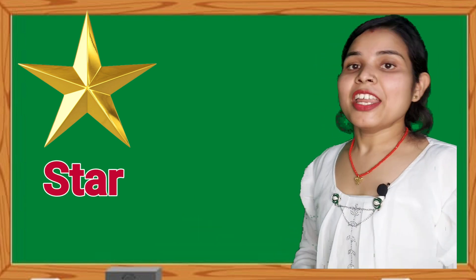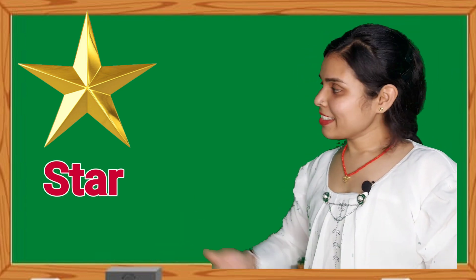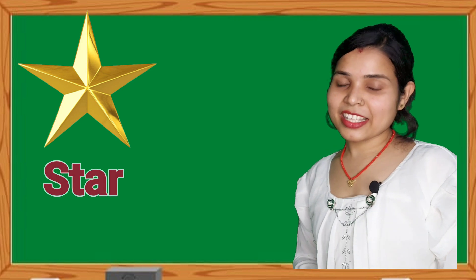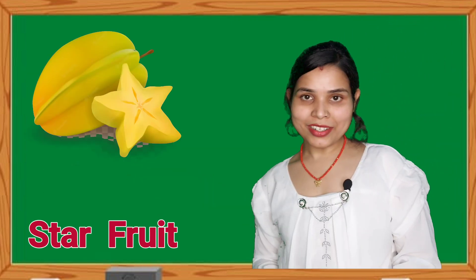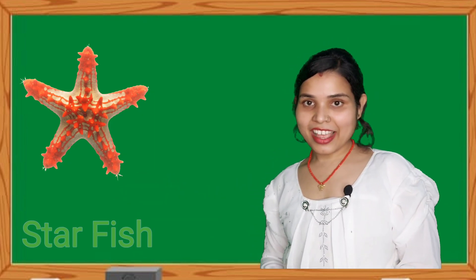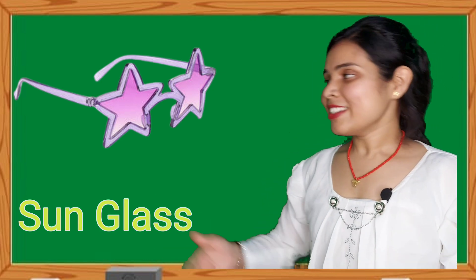Children, now next shape is star. The shape of star like star fruit, starfish and sunglasses. These are all examples of stars.